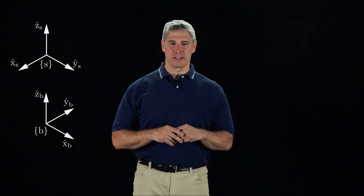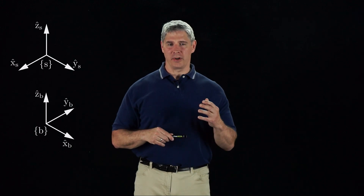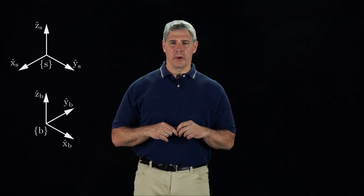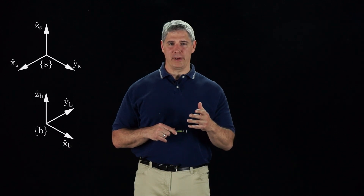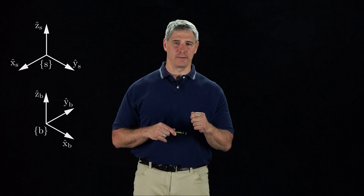We begin our study of the representation of the configuration of a rigid body by focusing on orientation only. The approach to representing the full configuration of a rigid body is analogous. Consider two frames: a space frame S and a body frame B. They are shown at different locations, but we are focusing on their orientations. We can express the orientation of frame B relative to S by writing the unit coordinate axes of frame B in the coordinates of frame S.